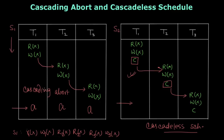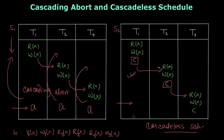In the first schedule where we had cascading abort, we also have cascading rollback — because when a transaction aborts it has to roll back. Once T1 rolls back, T2 also has to roll back, and then T3 also has to roll back. So this is cascading rollback. Due to cascading abort, cascading rollback happens. This is also called cascading rollback. In the next video we will understand what a strict schedule is and the correlation between strict schedule, cascadeless schedule, and recoverable schedule. Thanks for watching.